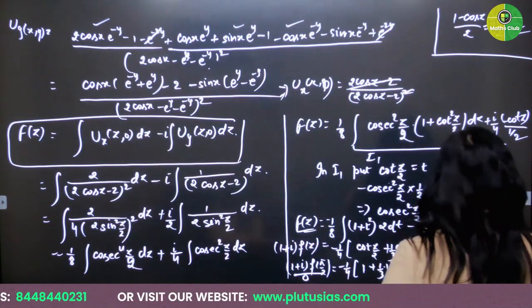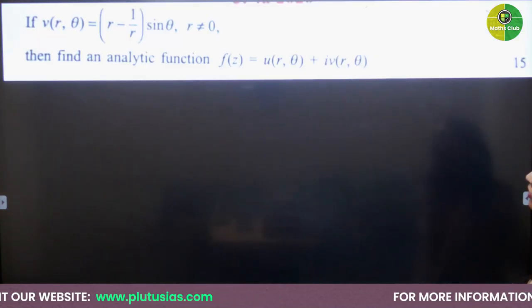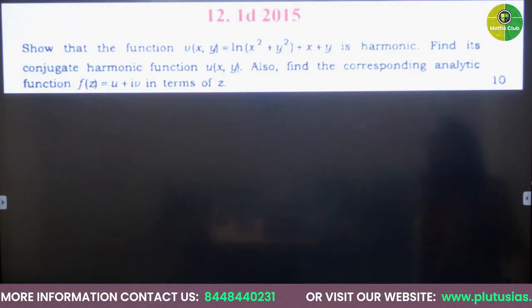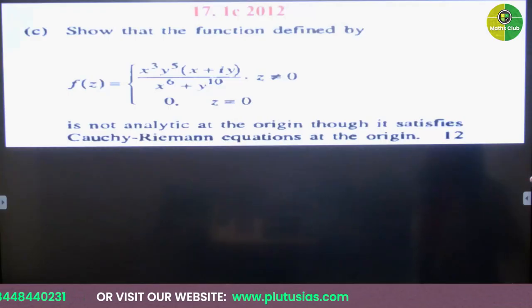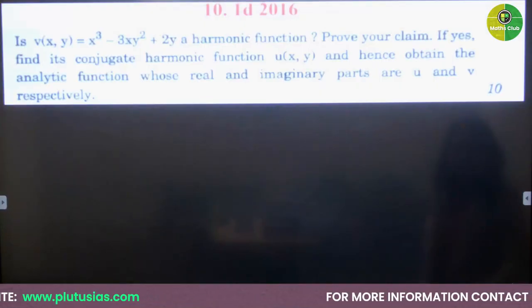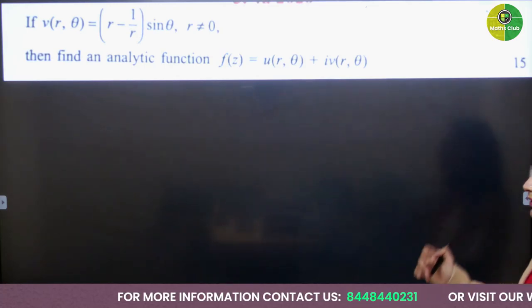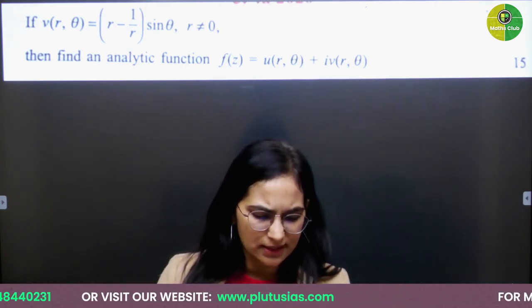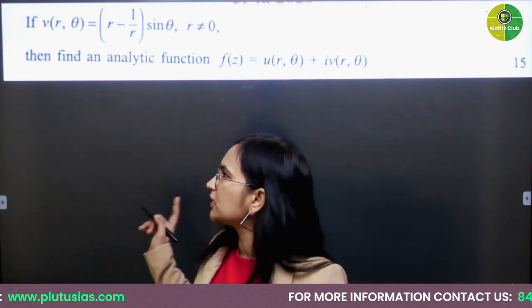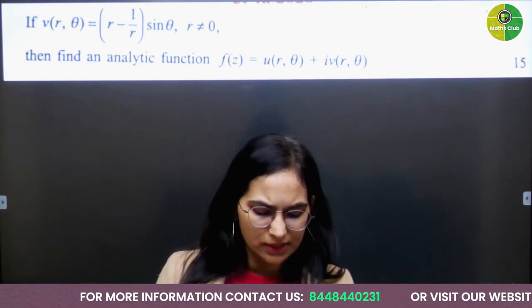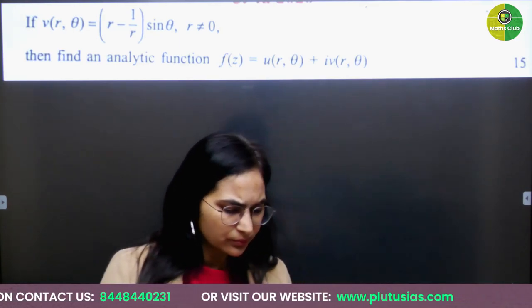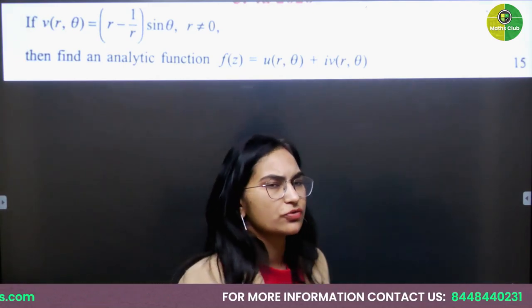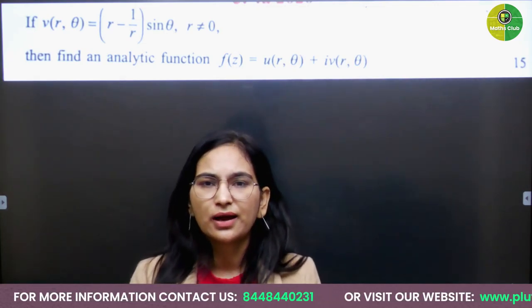This question is repeated and similar questions appear frequently. The next question: if V = V(r, θ) is given — this time the function is in polar form (r, θ is polar form, while x, y is Cartesian form). Find the analytic function F(z) = U + iota·V, where V is the imaginary part.